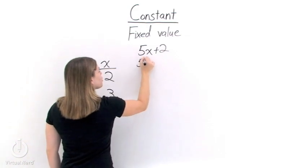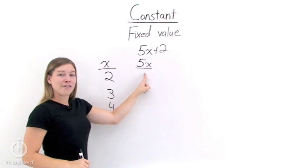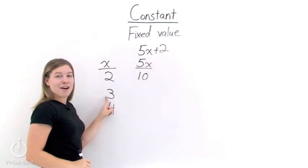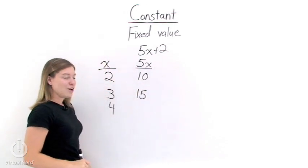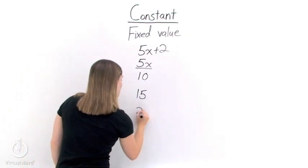Now let's look at our term 5x. When x is 2, 5x will become 5 times 2, which is 10. When x is 3, 5x will be 5 times 3, which is 15. And finally, when x is 4, 5x will be 5 times 4, which is 20.